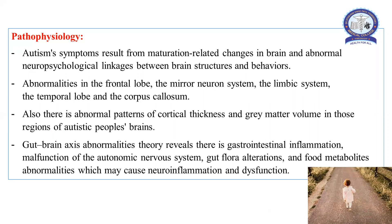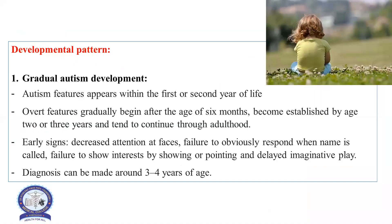There are abnormalities in the frontal lobe, mirror neuron system, limbic system, temporal lobe, and corpus callosum. It is also observed that there is an abnormal pattern of cortical thickness and grey matter volume in those regions of autistic people's brains. Another theory regarding autism is gut-brain axis abnormalities, involving gastrointestinal inflammation, malfunction of the autonomic nervous system, gut flora alteration, and food metabolite abnormalities, which lead to neuroinflammation and dysfunction.